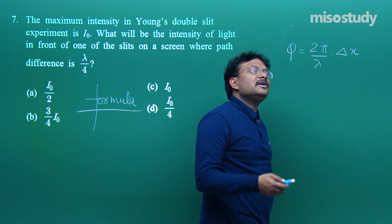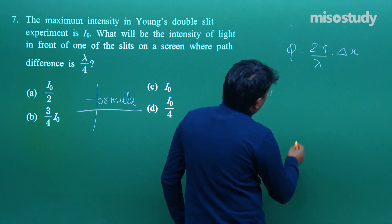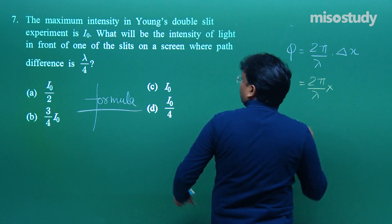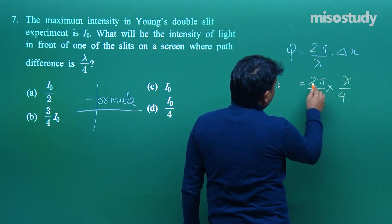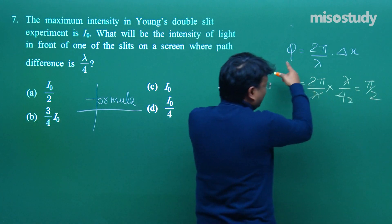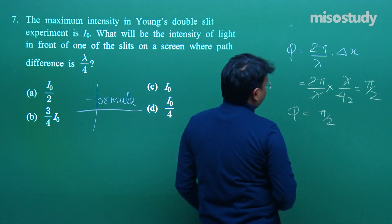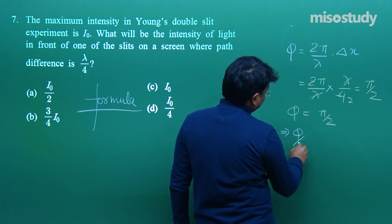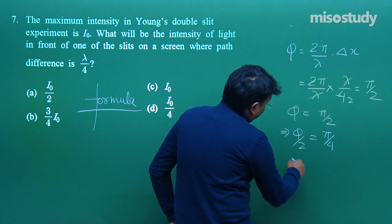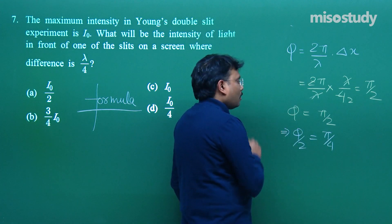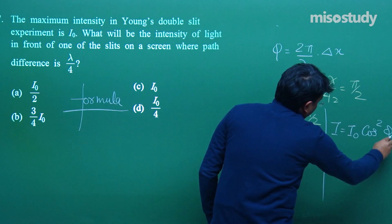Sometimes we miss easy formulas, so writing practice is good. Putting in the values: Δx = λ/4, so φ = (2π/λ) × (λ/4) = π/2, which is 90°. Now, φ/2 = π/4. The intensity formula is I = I₀ cos²(φ/2), which is why we converted φ to φ/2 — so the value directly fits here.